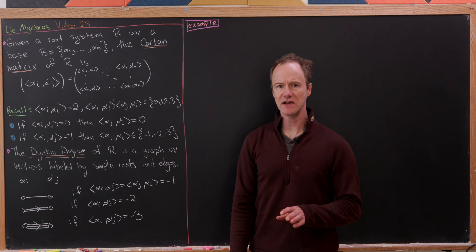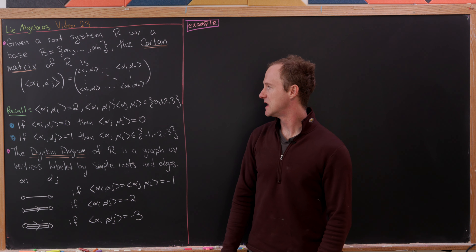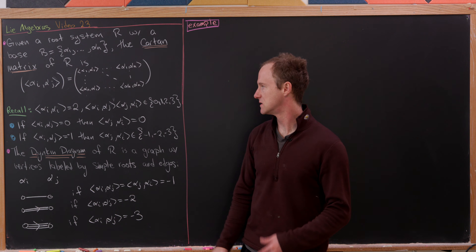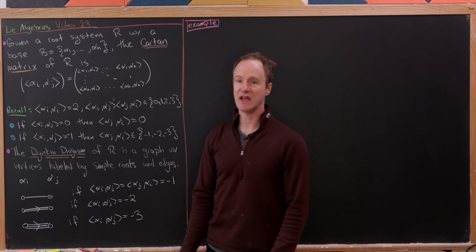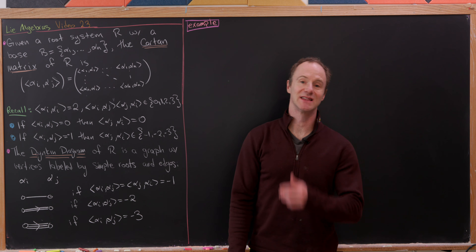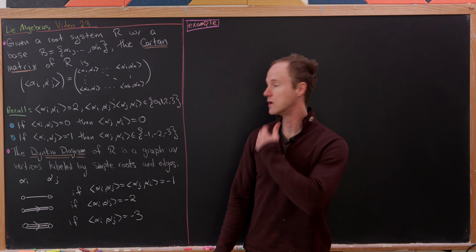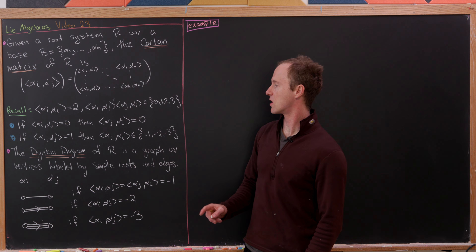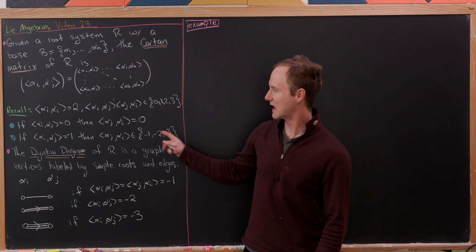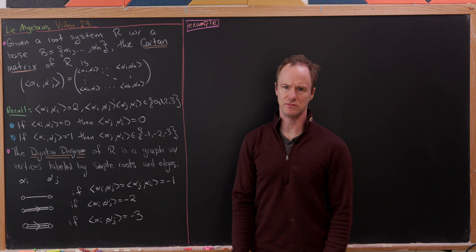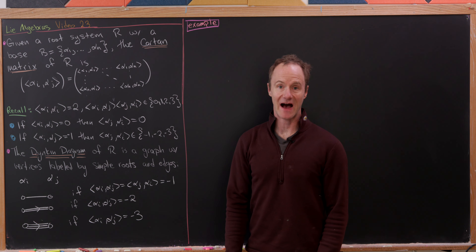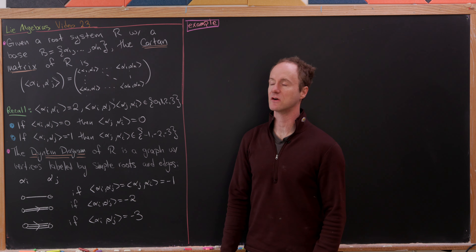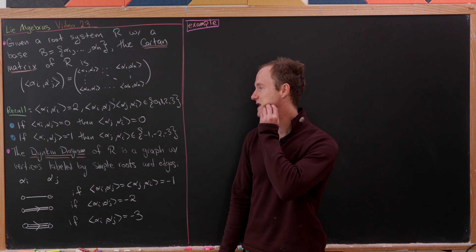Also, if i is not equal to j, then alpha i, alpha j is always less than or equal to 0. So that's some of the stuff about a Cartan matrix and the values that this bilinear form on the simple roots can take.